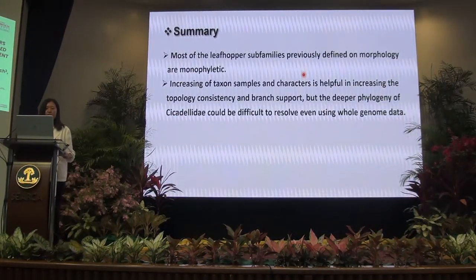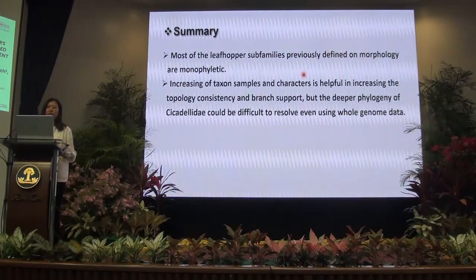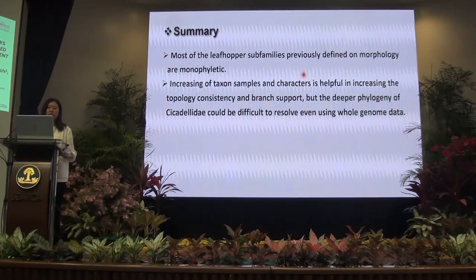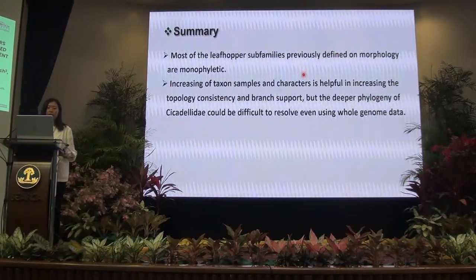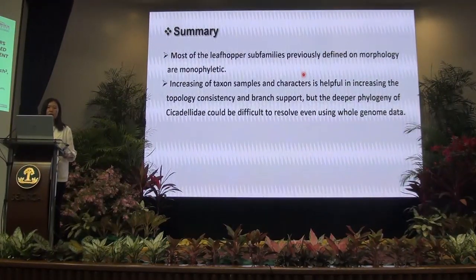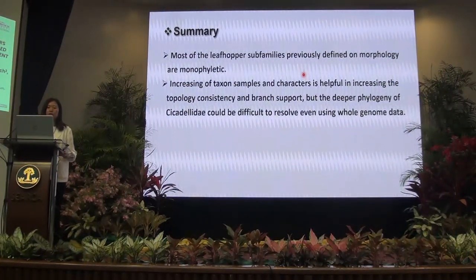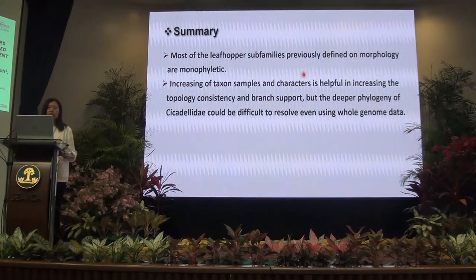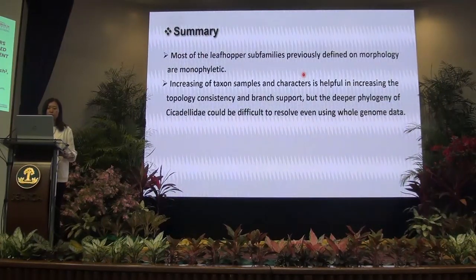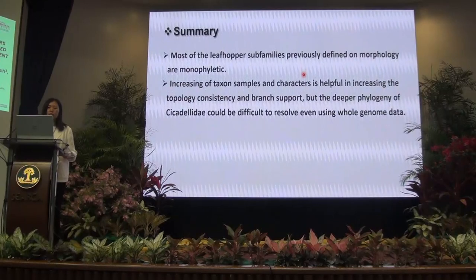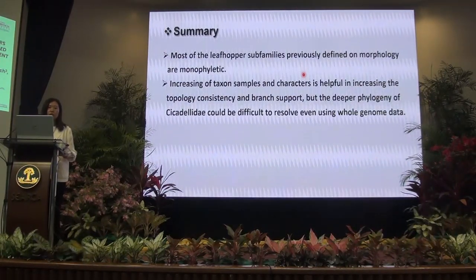In summary, most leafhopper subfamilies previously defined by morphology are supported as valid, suggesting these groups are well defined based on morphological characters. We tried different ways to increase topological consistency and branch support — increasing taxon sampling and molecular data, excluding the third codon position due to its accelerated evolutionary rates, and excluding gene trees with very low average branch support values. However, the deep phylogeny of Cicadellidae remains consistently largely unresolved, and this may be difficult to resolve even using whole genome data in the future.